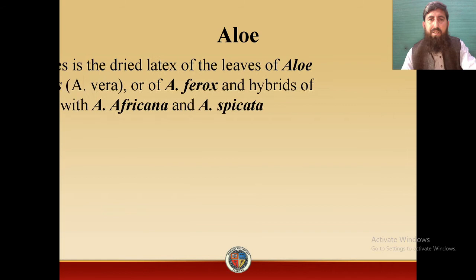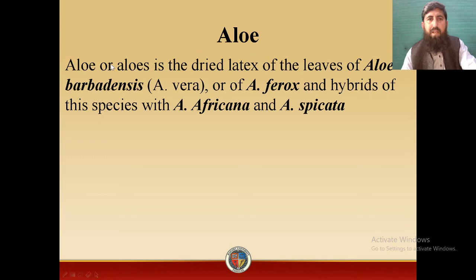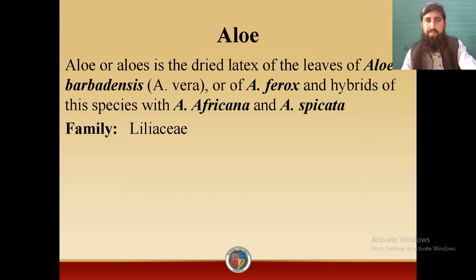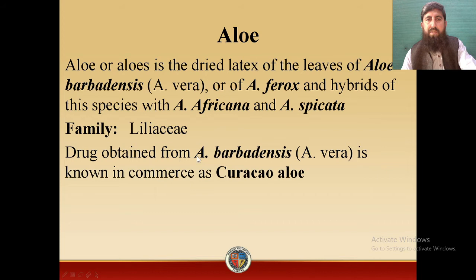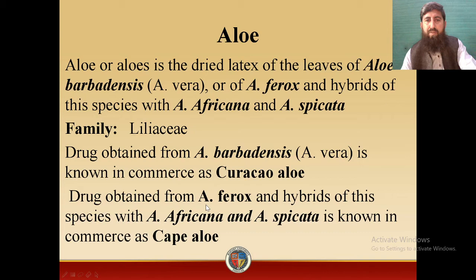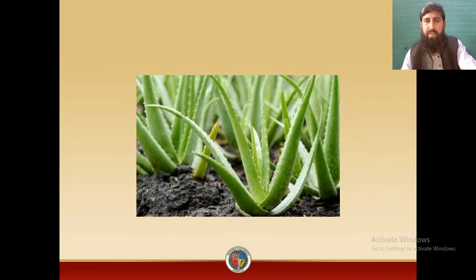The second drug is Aloe, which is also included in the anthraquinone glycosides. Aloe is a dried latex of the leaves of Aloe barbadensis, also known as Aloe vera, or of Aloe ferox and hybrids of this species with Aloe africana or Aloe spicata, family Liliaceae. Drug obtained from Aloe barbadensis is known in commerce as Curaçao aloe, and drug obtained from Aloe ferox and its hybrids is known as Cape aloe.